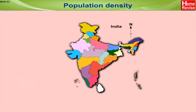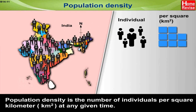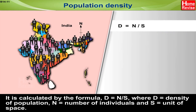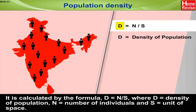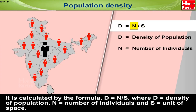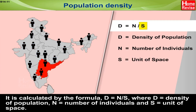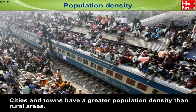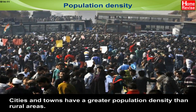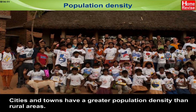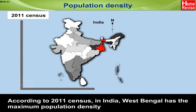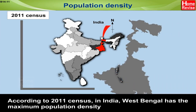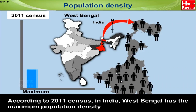Population density. Population density is the number of individuals per square kilometer at any given time. It is calculated by the formula: D = N/S, where D is density of population, N is number of individuals, and S is unit of space. Cities and towns have a greater population density than rural areas. According to the 2011 census in India, West Bengal has the maximum population density, while Arunachal Pradesh has the lowest.